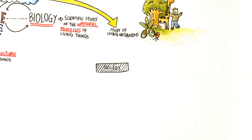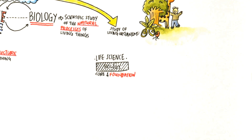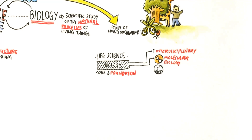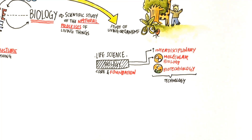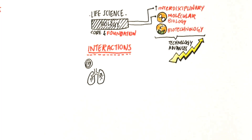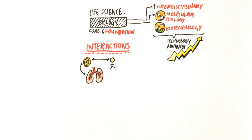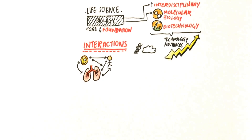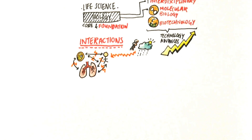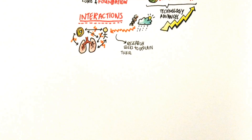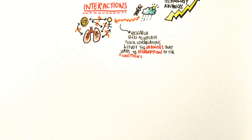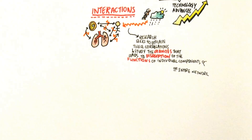Biology remains the core and foundation of life sciences. Life sciences is more interdisciplinary — fields such as molecular biology and biotechnology are formed with technological advances. Interactions occur within a single cell, at the organ level, and also at the level of the entire organism. Genetic information and environmental influences affect the functions of these interactions.